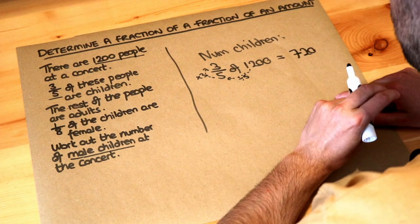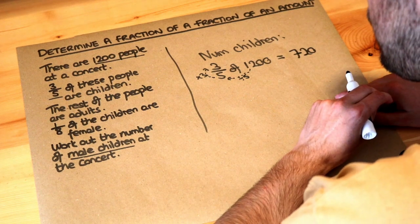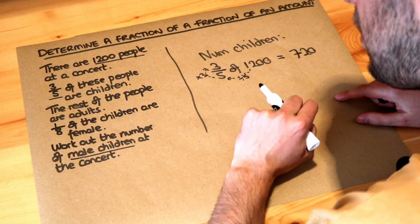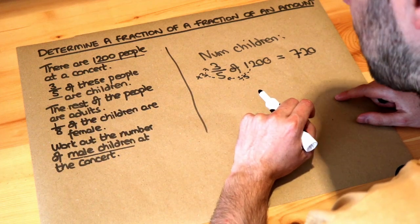So there's 720 children. Now it says the rest of the people are adults but it doesn't mention adults anywhere else in the question so it might be that we don't need to use that.